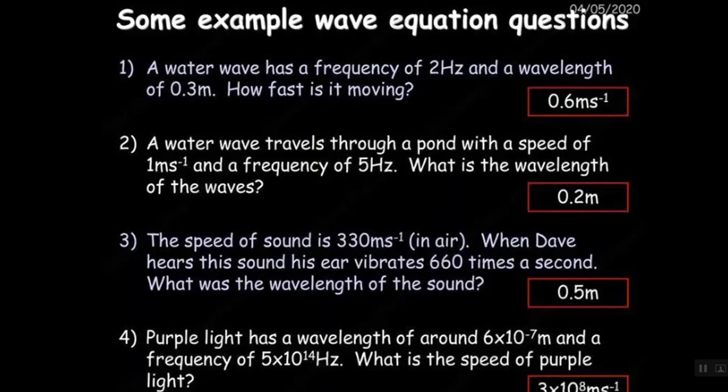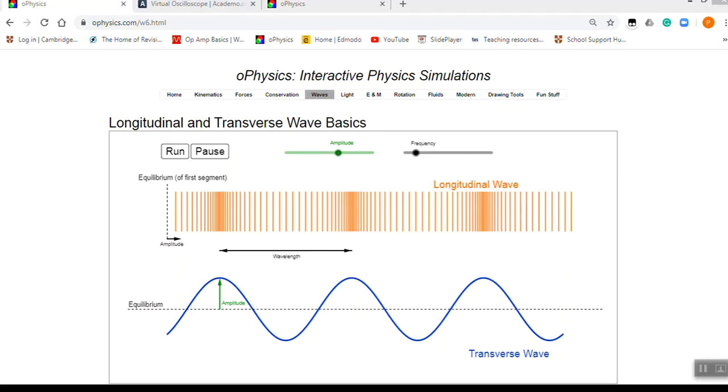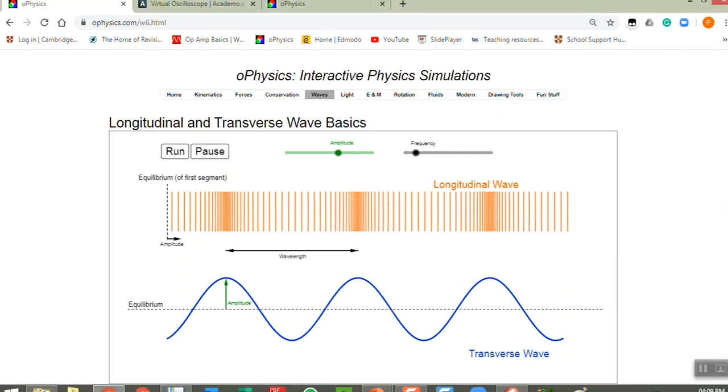So the next part we'll quickly look at a recap for transverse and longitudinal waves. Just to remember the difference between the transverse and the longitudinal wave, the transverse wave has a disturbance that is perpendicular to the direction of the wave movement.